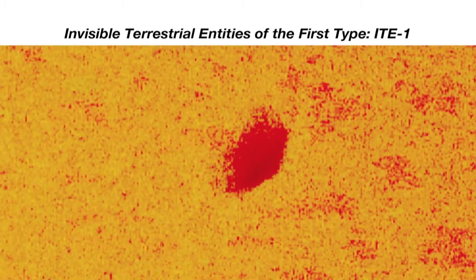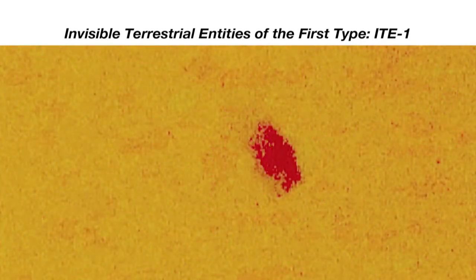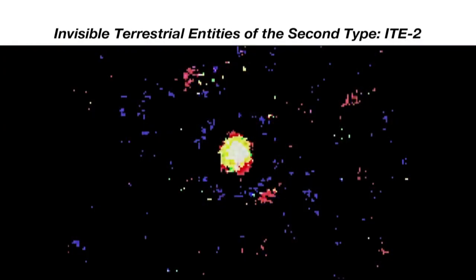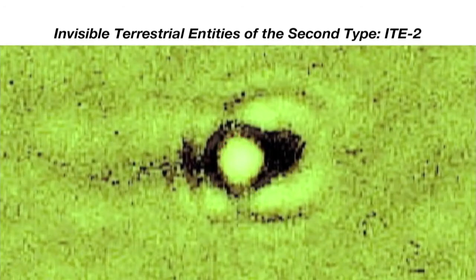We have detected at least two types of ITE. The first type, also called dark ITE, essentially consists of entities leaving a dark image in the background of digital cameras attached to our new telescope. The second type, called bright ITE, essentially consists of entities leaving a bright image in the background of digital cameras attached to our telescope, often visible without any enlargement.